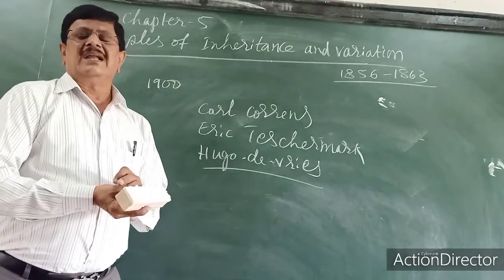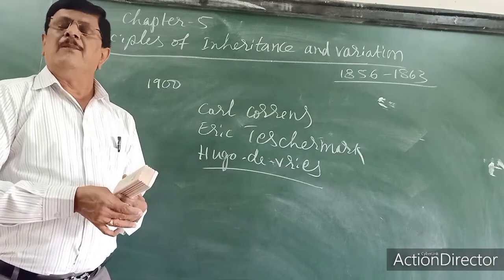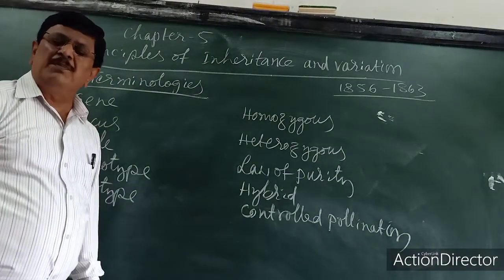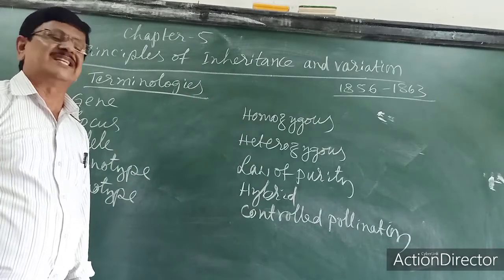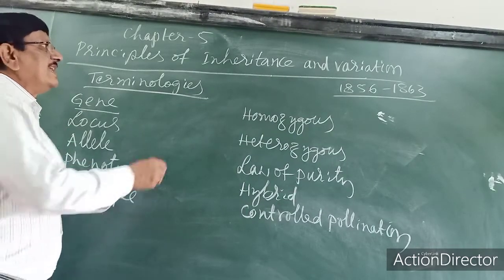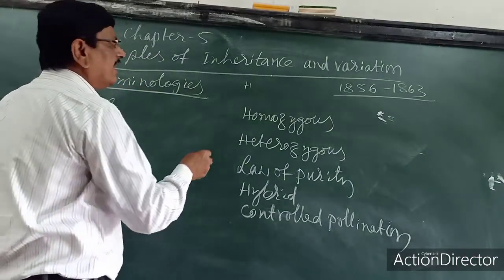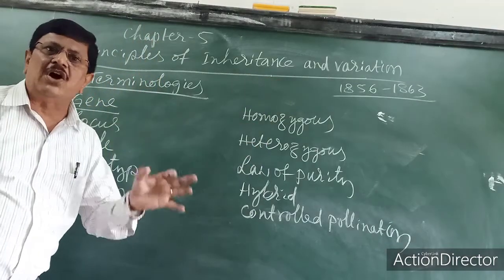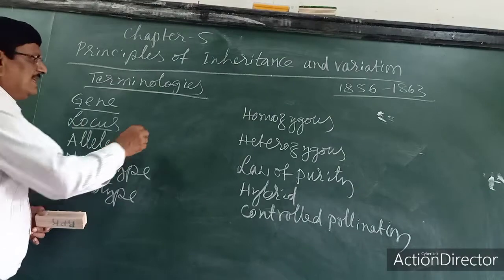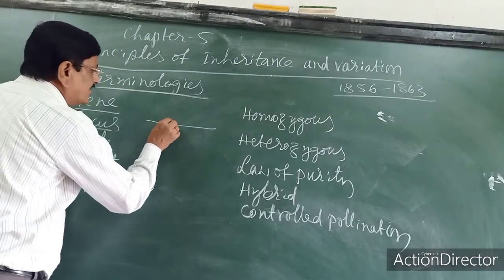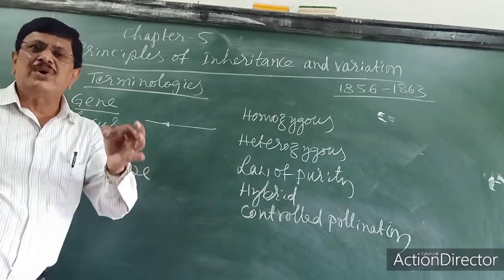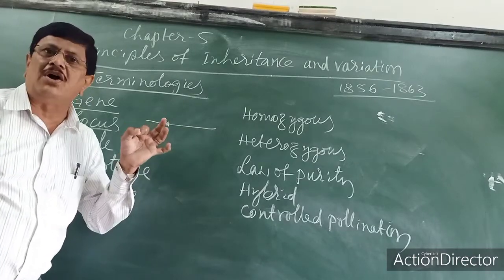Let us study the work conducted by Mendel and the new terms in this chapter. First term: Gene — a unit of heredity, present on DNA or chromosome. Next term: Locus — the exact place or location where a gene is present on the chromosome. Plural: loci.